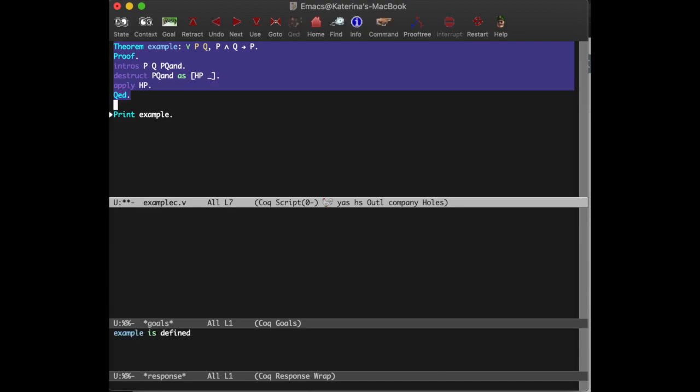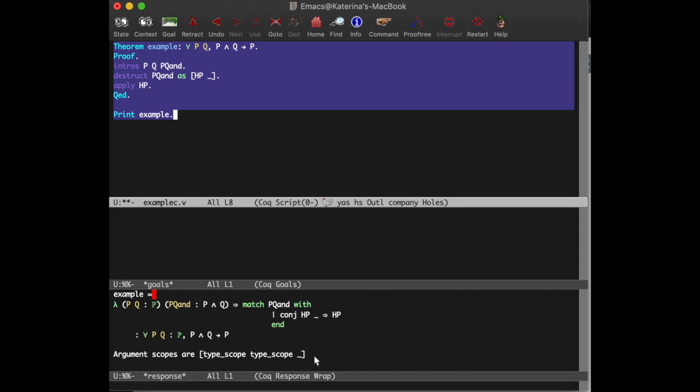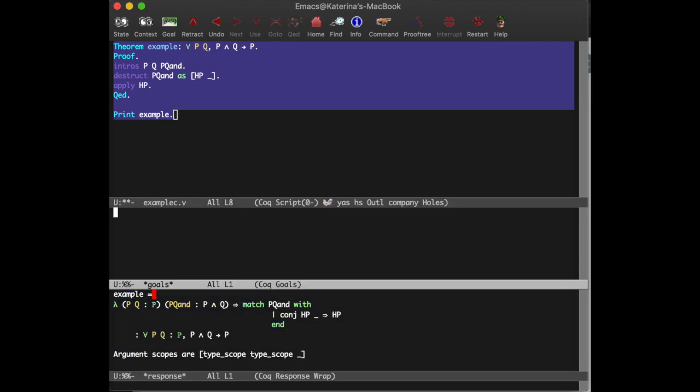Now let's take a look at what we just proved using the print command. What looked like a logical proof is actually a function. This function takes p and q of type prop, which is Coq's type that represents propositions, and pqand of type p and q, our assumption for a logical proof. The function pattern matches pqand against conjhp wildcard. You can think of p and q as being syntactic sugar for product type conj, which is a left element p and a right element q. The function returns HP, which is the variable name that the pattern matches bound to the first element of our conj type. So for any element of type p and q, it returns p.